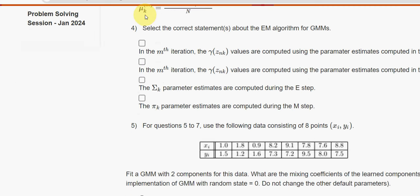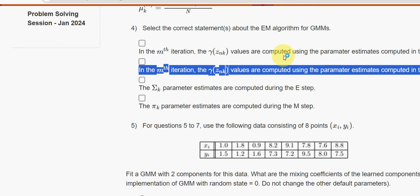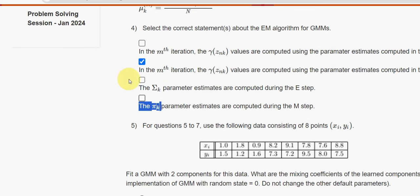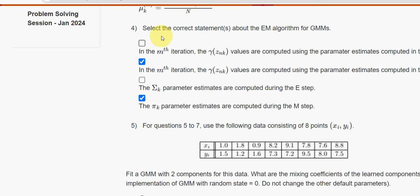Fourth question: select the correct statements about the EM algorithm for GMMs. I have got two correct options. The first is the second option — in the m-th iteration, the γ(z_nk) values are computed using parameter estimates from the (m−1)-th iteration. The other correct option is the fourth — the πk parameter estimates are computed during the M-step.